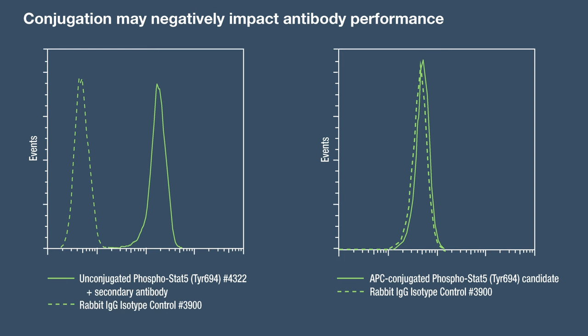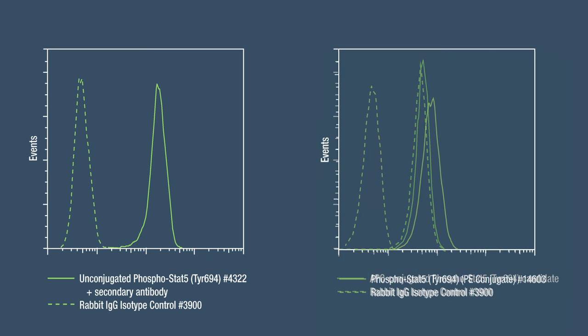The example on the right shows an antibody conjugated with APC that failed to perform in flow cytometry, compared to the unconjugated phospho-Stat5 antibody detected with a secondary in the left panel. This particular APC-conjugated antibody failed our validation testing and was not released as a product. Fortunately, by switching to a different fluorophore, phycoerythrin, we were able to produce a phospho-Stat5 antibody conjugate that passed our validation testing.